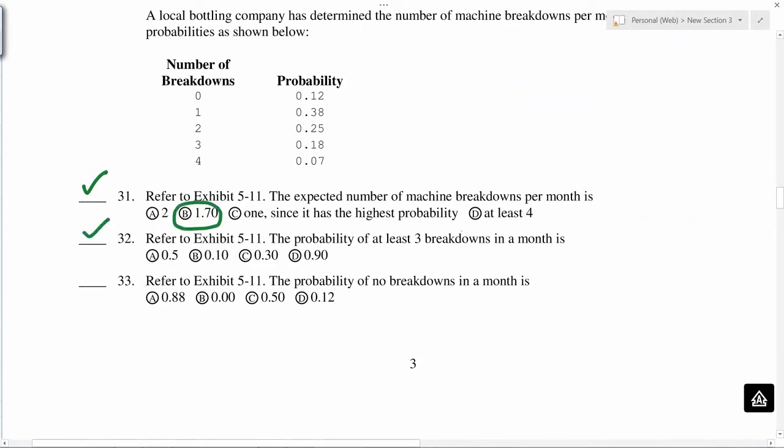The probability of at least three breakdowns in a month. At least three means three and above. So we add these two, we get 0.25. So we don't have 0.25 here, so there's a typo. This should be 0.25. Probability of no breakdowns is 0.12.